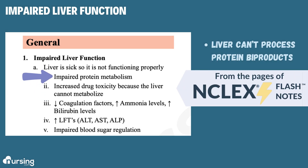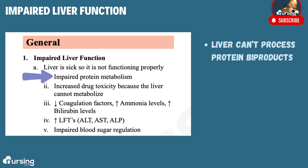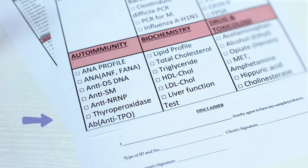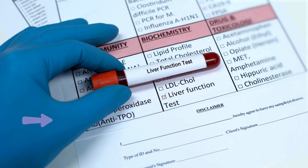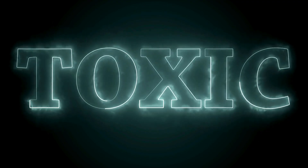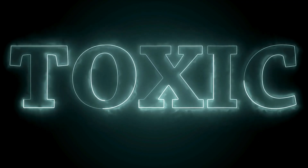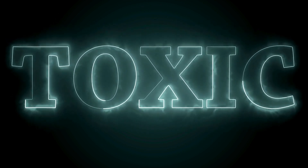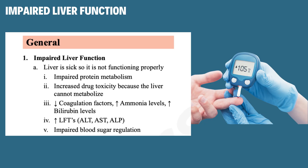Normally the liver takes the byproducts of protein breakdown and processes them to be excreted. Since it can't do that, things like ammonia are going to start climbing. We'll also see liver function tests elevate because the liver isn't processing those amino acids. We may also see drug toxicity because the liver isn't able to detoxify those drugs — any medications normally cleared by the liver could end up building up in the system. And because the liver is responsible for storage and synthesis of glycogen, we may also see impaired blood sugar regulation.